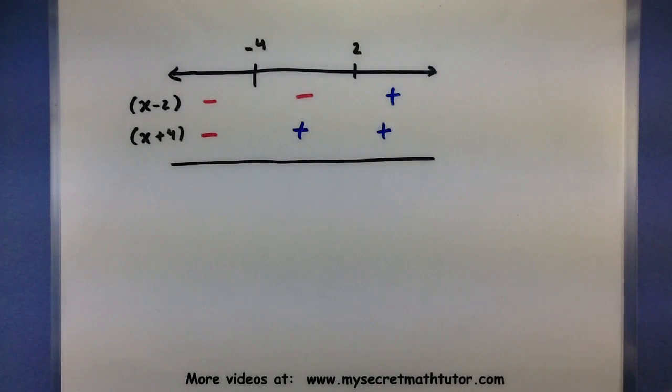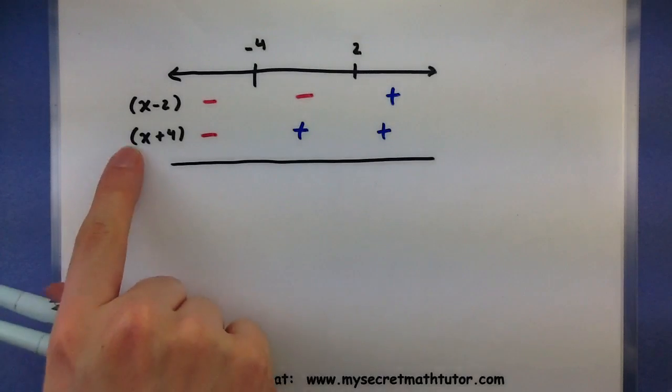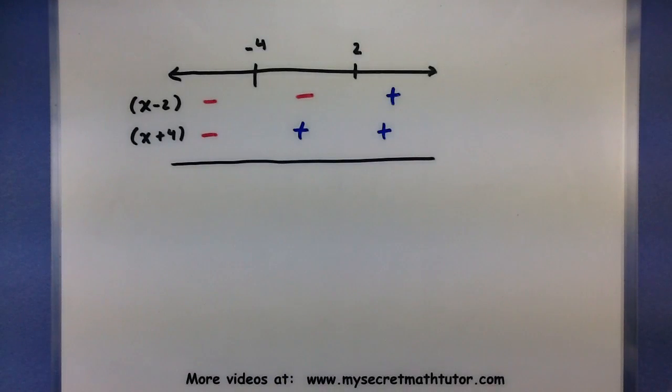So what this is helping us do is it's helping us determine what each of the individual pieces in our quadratic are doing, whether they're positive or negative. Now, in our inequality, these two factors are being multiplied together.